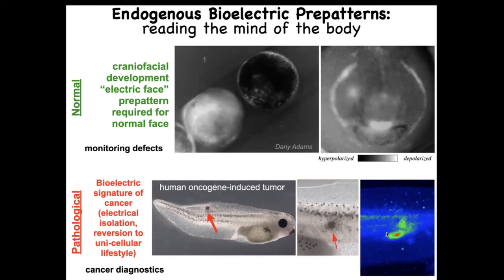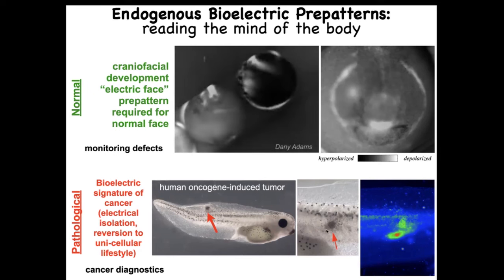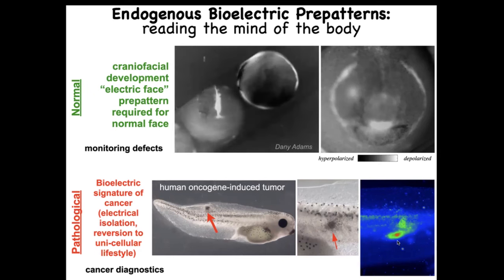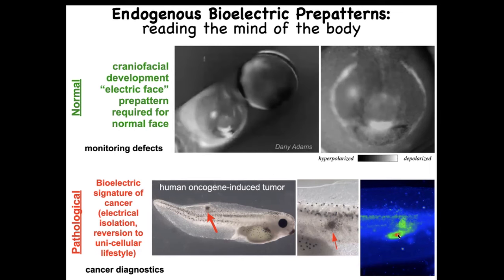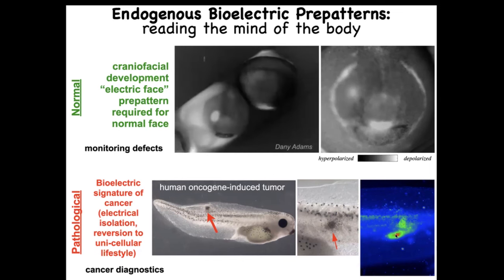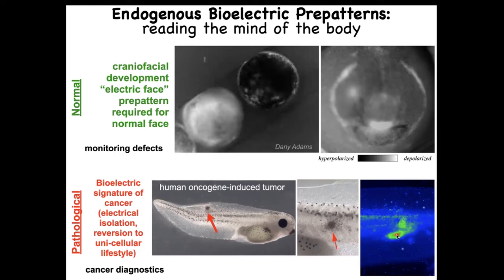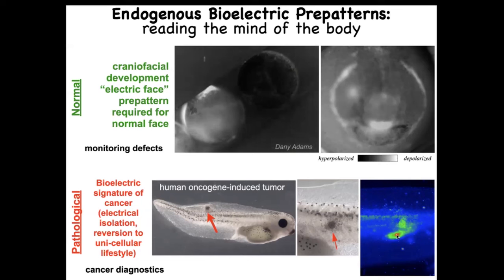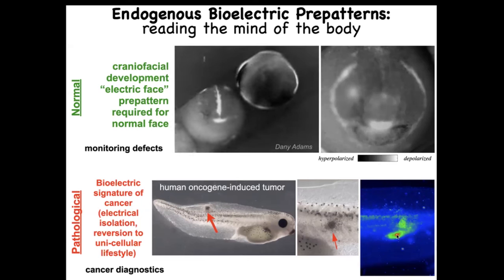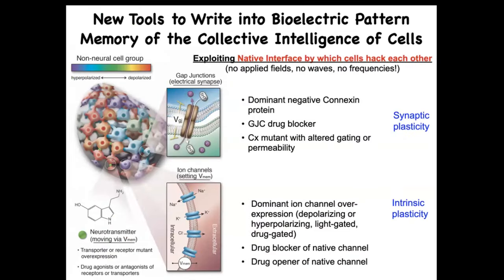Here is a pathological pattern. We've injected a human oncogene into an embryo — eventually it will make a tumor that will metastasize — but already, using this voltage dye, you can see what's going on. These cells are electrically decoupling from their neighbors, acquiring a weird depolarized membrane potential, rolling back to their amoeba lifestyle, migrating and treating the rest of the body as external environment. We've developed tools to rewrite these patterns using the native interface — the ion channels on the cell surface and the gap junctions — using optogenetics and drugs from neuroscience to open and close channels and control network topology.